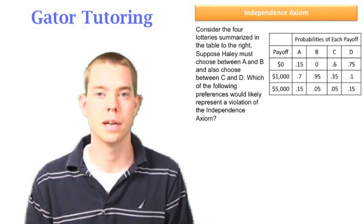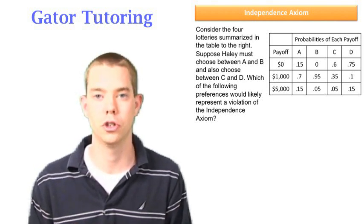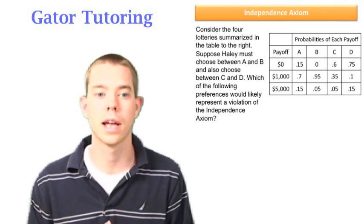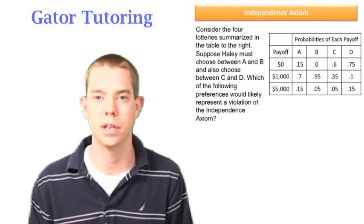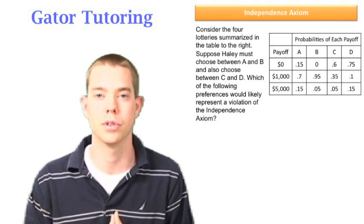We're given these four different gambles in the table, and it says that Haley must choose between gamble A and B, and she also must choose between gamble C and D. It says which of the following preferences would likely represent a violation of the independence axiom? And then it lists some different preferences, answer choices A through D.